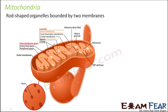Mitochondria are rod-shaped organelles bounded by two membranes. There is one outer membrane and one inner membrane. Between these two membranes, the space present is called the peripheral space. This entire structure that you see on the screen is the mitochondria.